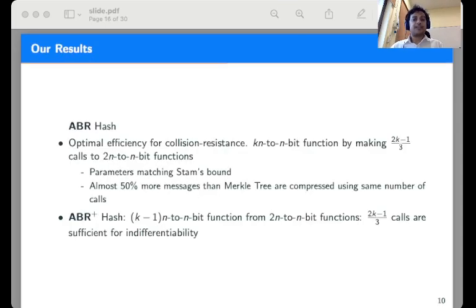We show that yes, indeed such constructions exist. We present an augmented binary tree ABR hashing mode which compresses kn-bit message to n-bit digest by making (2k-1)/3 calls to the underlying 2n to n-bit functions and achieve n/2 bits of collision resistance. Compared to Merkle tree, this gives almost 50% improvement as 50% more messages can be compressed.